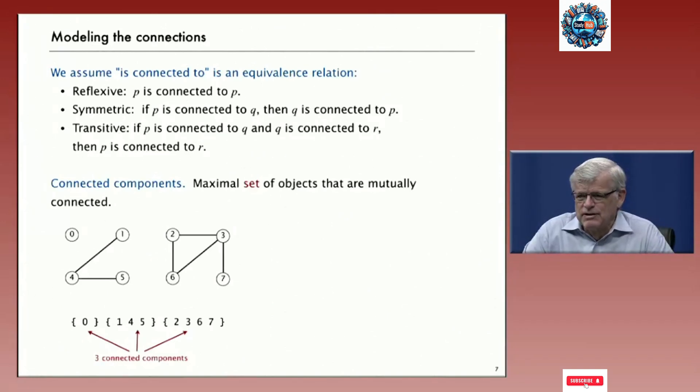When we have an equivalence relation, a set of objects and connections divide into subsets called connected components. A connected component is a maximal set of objects that's mutually connected. For example, in this small example here, there's three connected components. One, consisting of just object zero, second one, objects one, four, and five, and third one, the other four objects. And these components have the property that any two objects in them are connected, and there's no object outside that's connected to those objects. It's connected components. Our algorithms will gain efficiency by maintaining connected components and using that knowledge to efficiently answer the query that they're presented with.